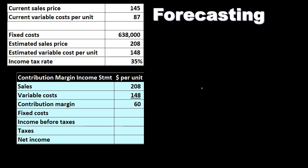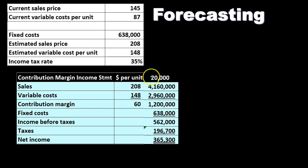Now we can consider this in terms of a worksheet broken out in this format. We have sales, variable costs, and contribution margin. With units at the top — at 20,000 units — the sales are 208 times 20,000 equals 4,160,000; variable costs are 148 times 20,000 equals 2,960,000; and the contribution margin is 60 times 20,000 equals 1,200,000, or 4,160,000 minus 2,960,000.